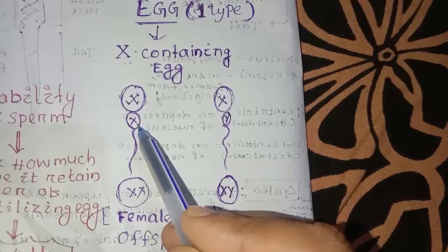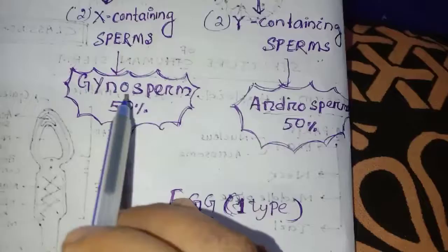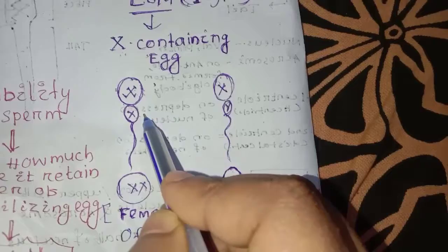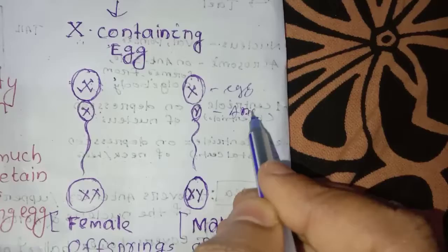X-containing sperm fertilizes the female egg. When X-containing sperm fertilizes, a female offspring results.